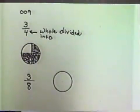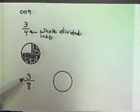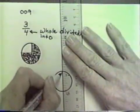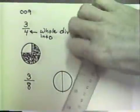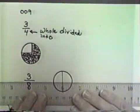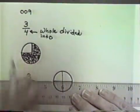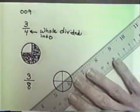Let's look at another fraction, three-eighths. This time it tells us that our circle is to be divided into eight parts. So let's divide our circle first of all in half, and then let's divide our half, and then we'll divide those in half again.